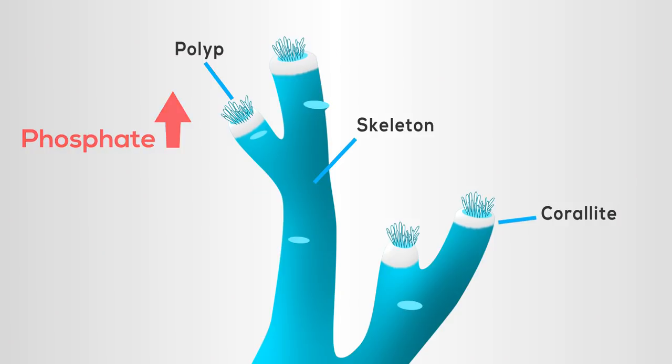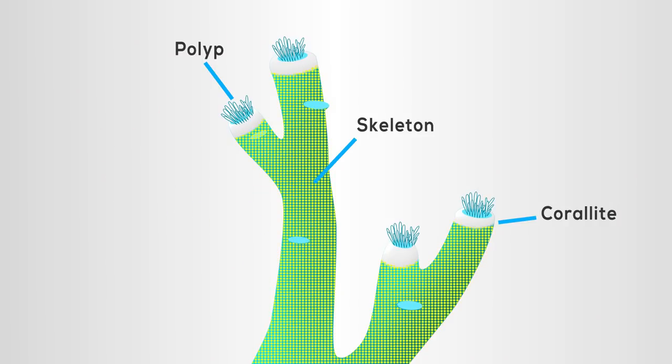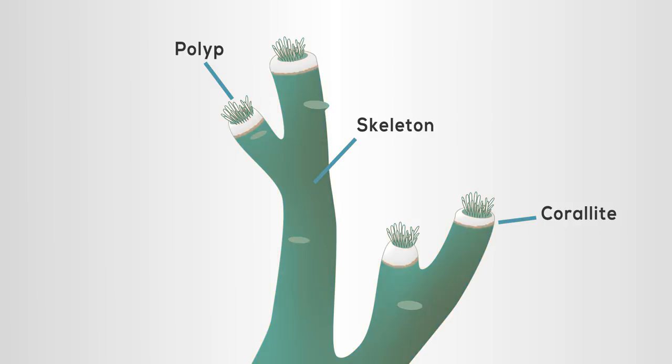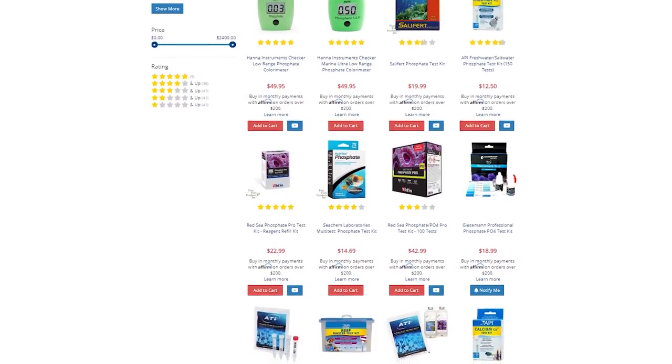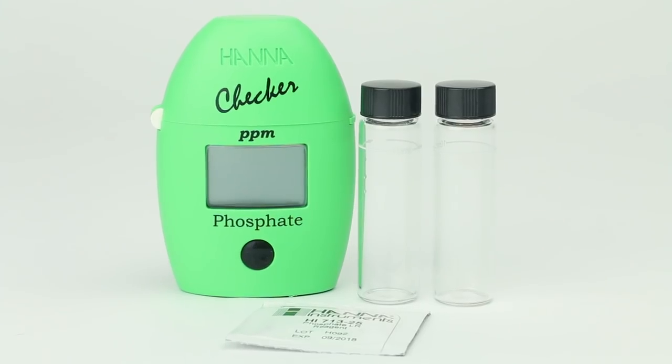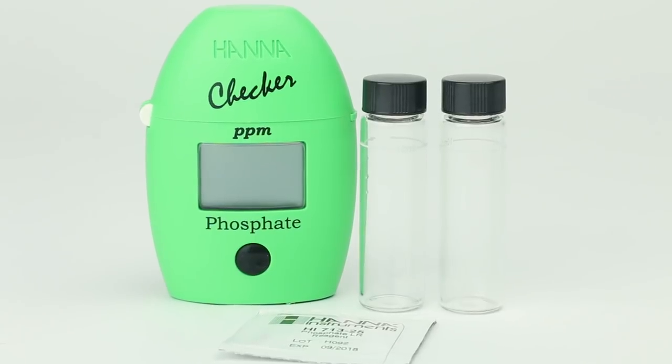As phosphate levels in your tank rise, the zooxanthellae in your corals can become overstimulated and start to brown out, which is typically not the aesthetic most reefers are looking for. There are a number of test kits on the market that will let you check your phosphate levels, but some of our favorites are the Hanna Instruments Phosphate Checkers.